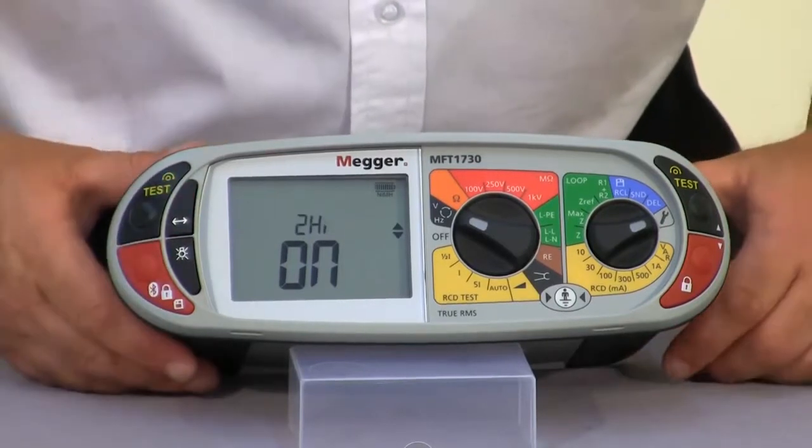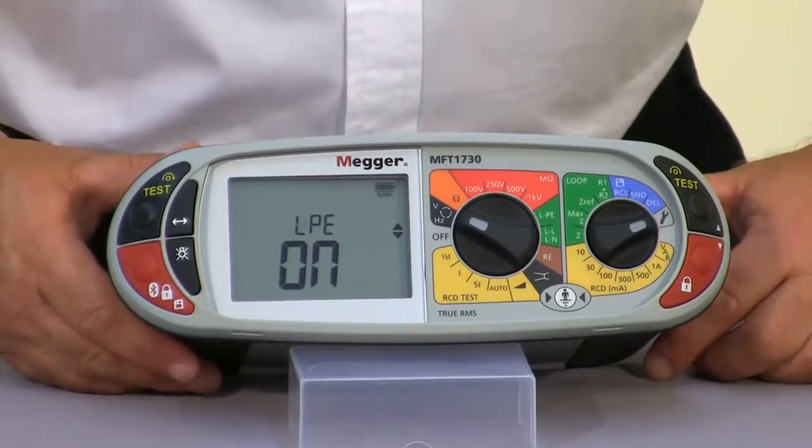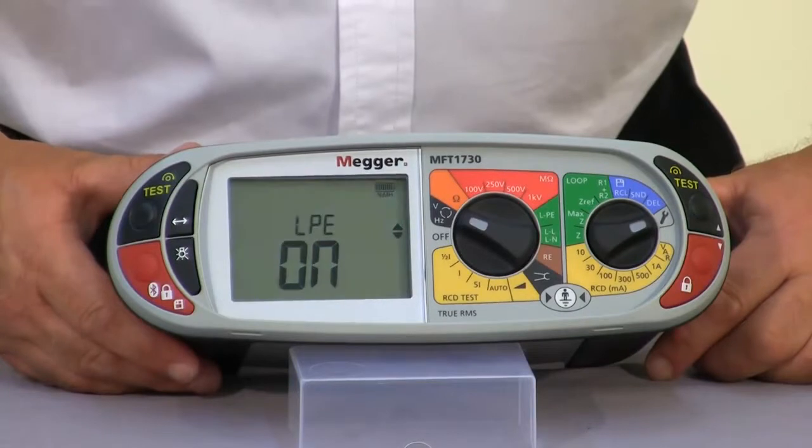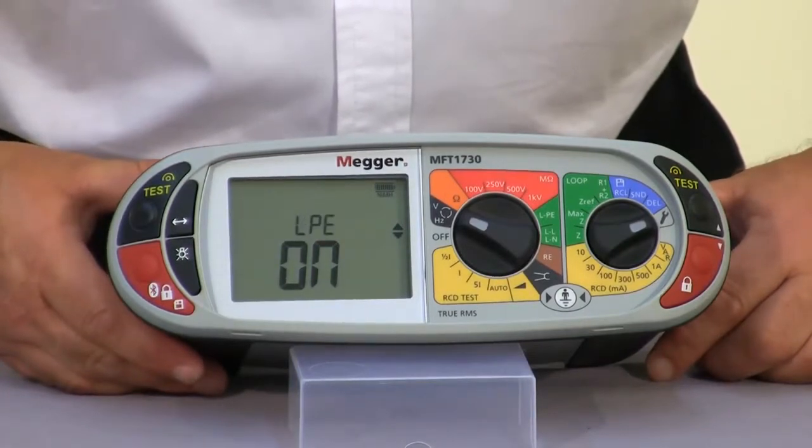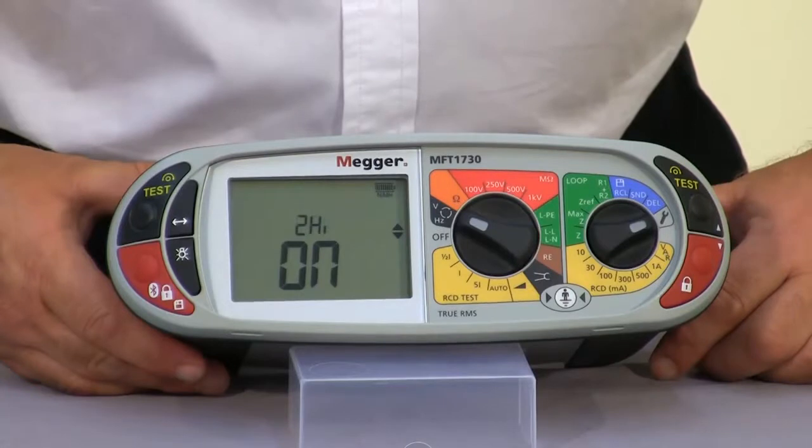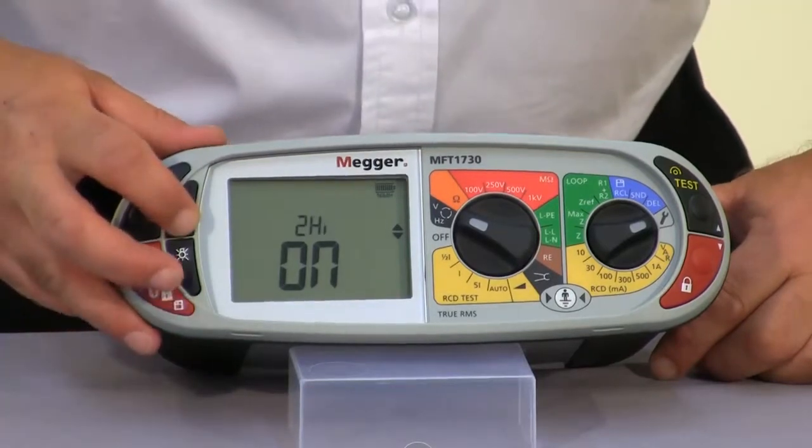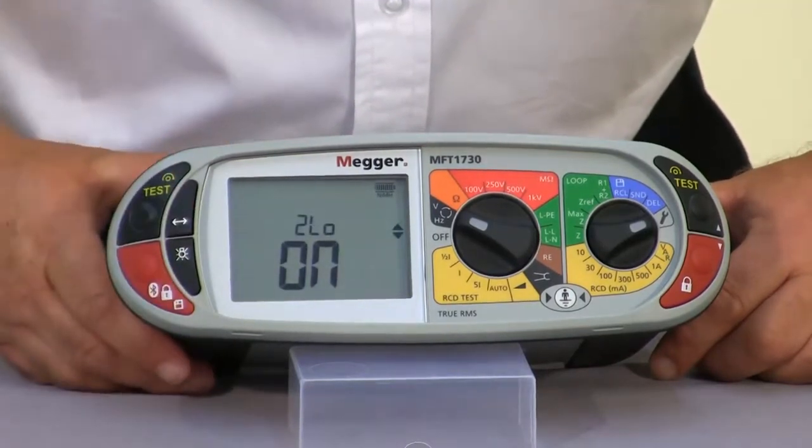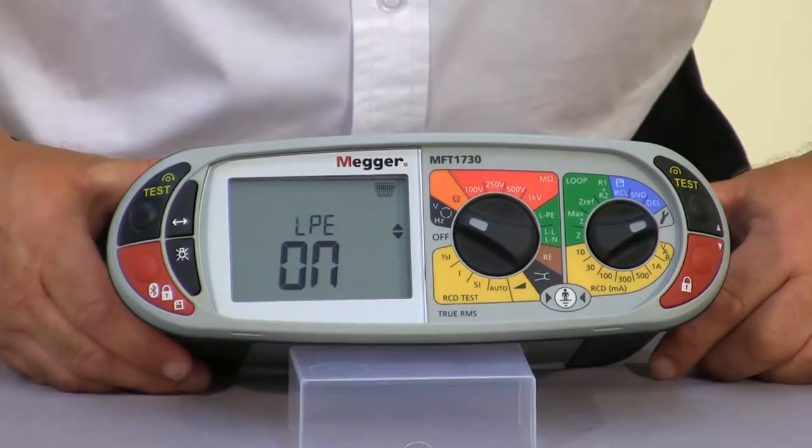We then have the option to turn on or off the LPE two-wire high current test. So if you do not want to carry out any high current testing, you can actually set the unit so that this is in the off position. And this also relates to the low current two-wire test.